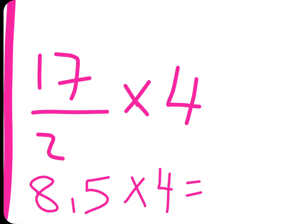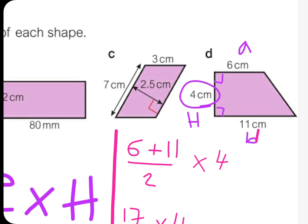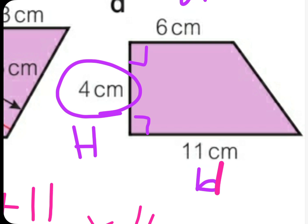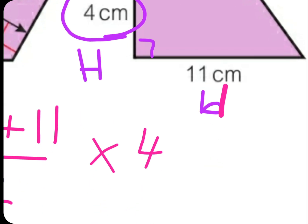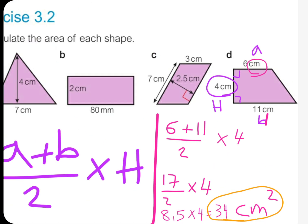Good job. Now the unit which is used in the trapezoid is centimeter, so we're going to use the same unit. So the answer will be 34 centimeter squared. This is the answer.